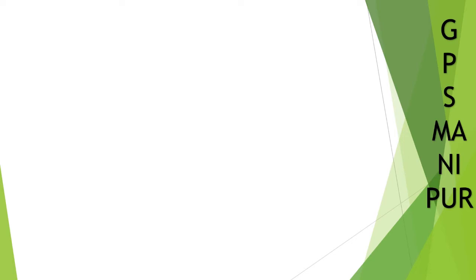Now we are doing question number exercise 2.3, question number 1, roman number 21. Let me write down the question: x squared minus 5x by 6 plus 1 by 6.